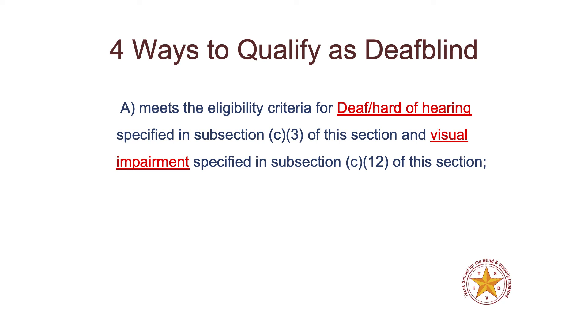Here in Texas we have our own definition that makes it a little easier to understand than the broad federal definition. For our state definition, there are four ways that students can qualify as DeafBlind. The first is the most straightforward: the student would meet eligibility criteria for both a student who is Deaf and hard of hearing and for a student who has a visual impairment. The teacher of the Deaf and hard of hearing does an evaluation and they would qualify, and same for vision — the TVI does an evaluation and the student would qualify.